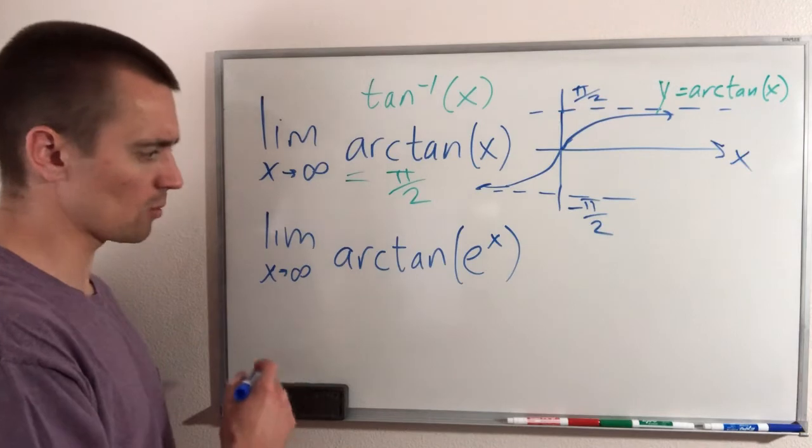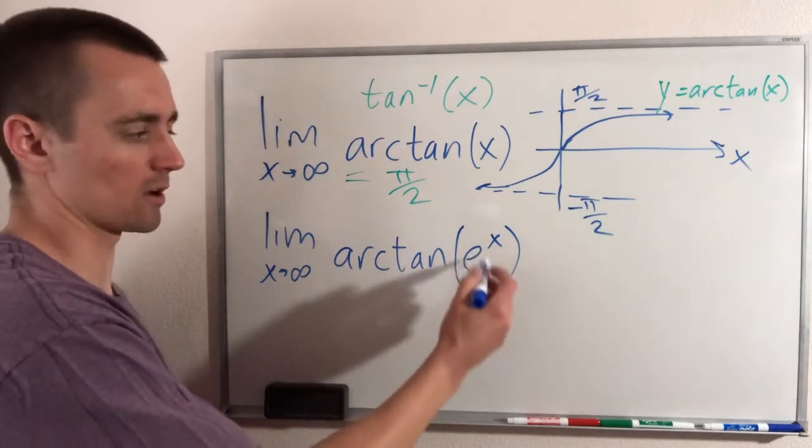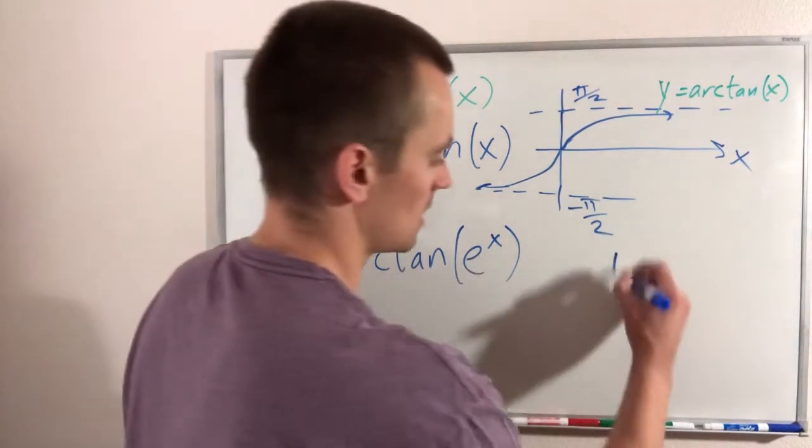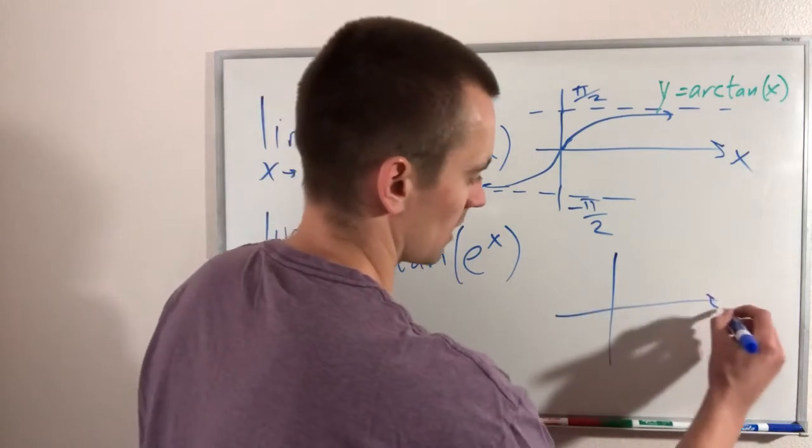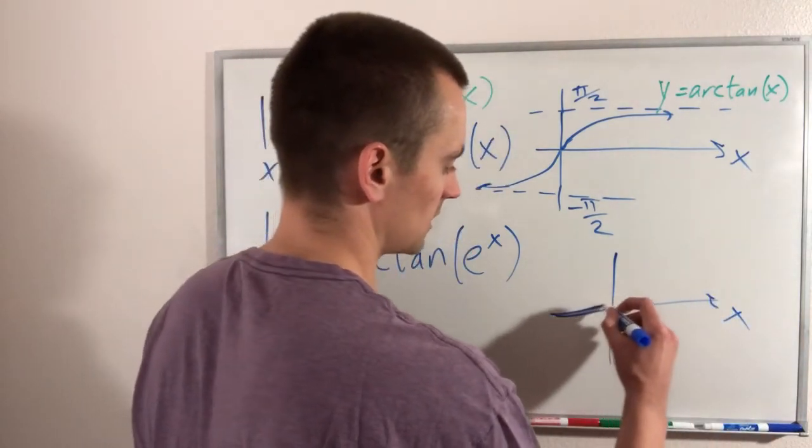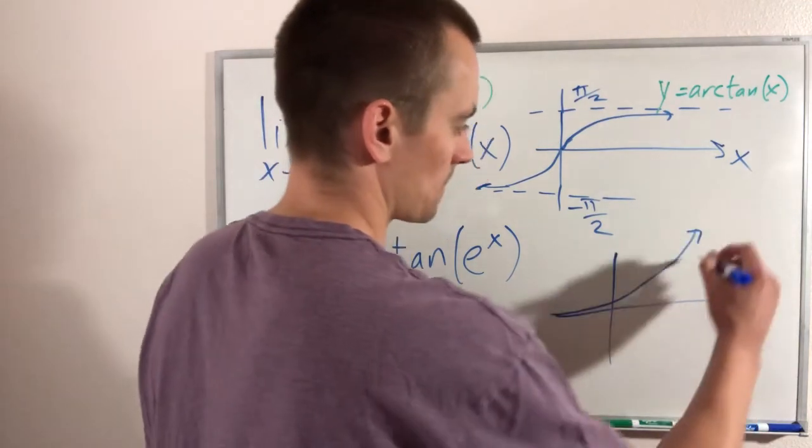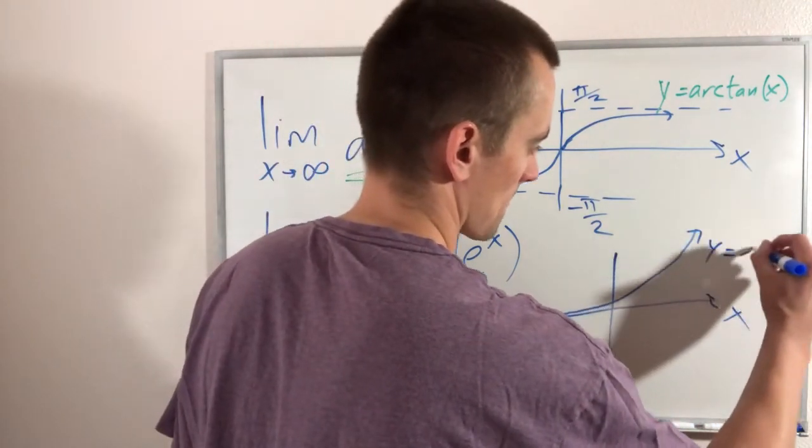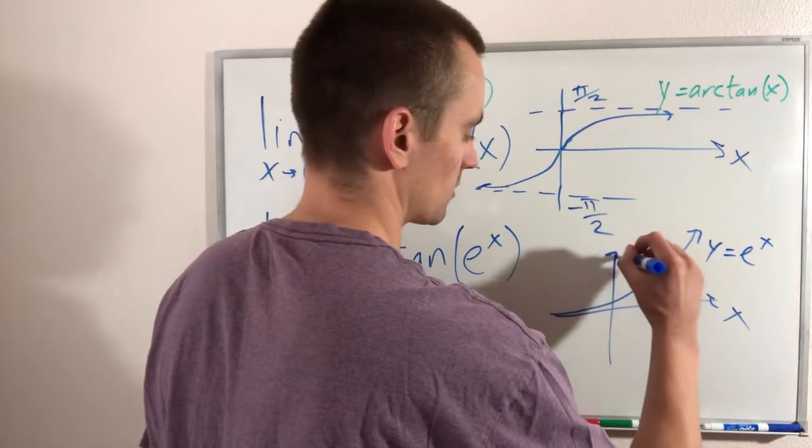So what we want to do is also think about what a graph of e to the x looks like. So let's think about that. If we have x and then we have our function e to the x, it's going to do something like this. It's just going to keep on going.